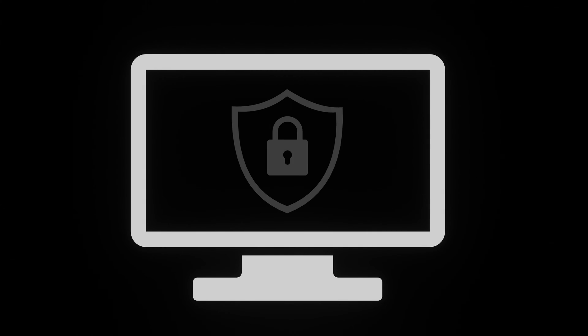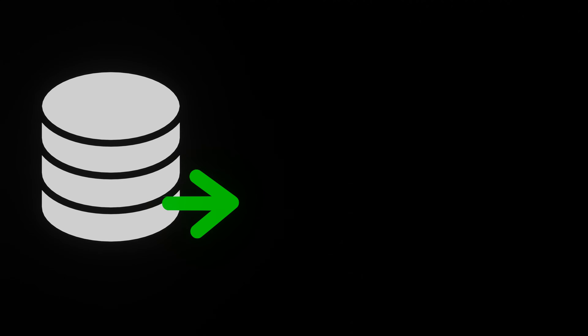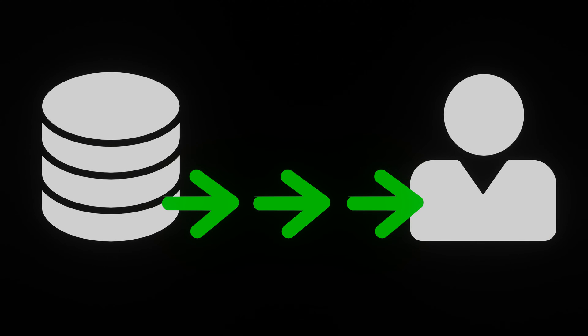In cybersecurity, our goal is to secure the systems of our clients. One of the core components of this is ensuring that the data that our clients have or send over the internet or network is secure and available to the right people at the right time. For this, we can use the CIA triad.